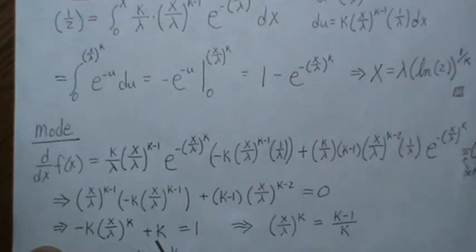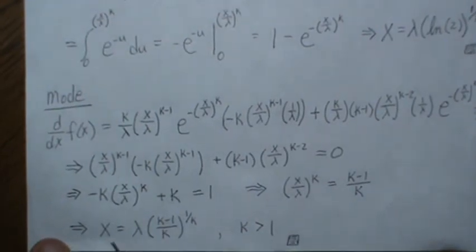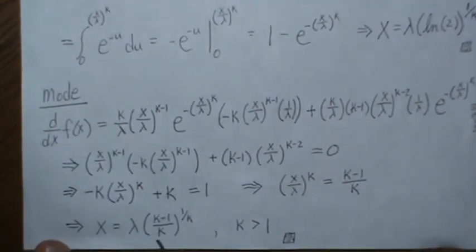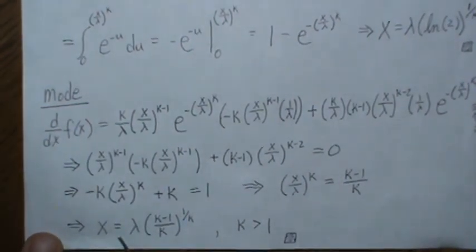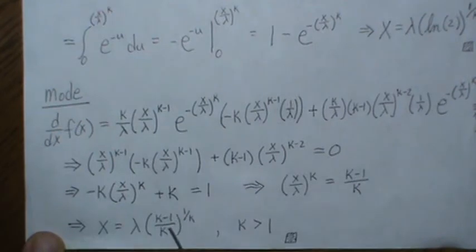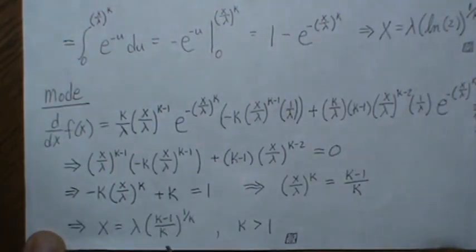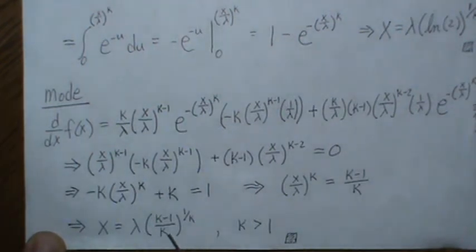And then we subtract k, divide by minus k, we get this, and then we take the kth root of both sides, and we get this. Now, there's one criteria here that, remember, x is, its domain is 0 or more. And so if k is greater than 1, then this is negative, and so that can't happen. So we have to restrict it to be greater than 1. So that's it.